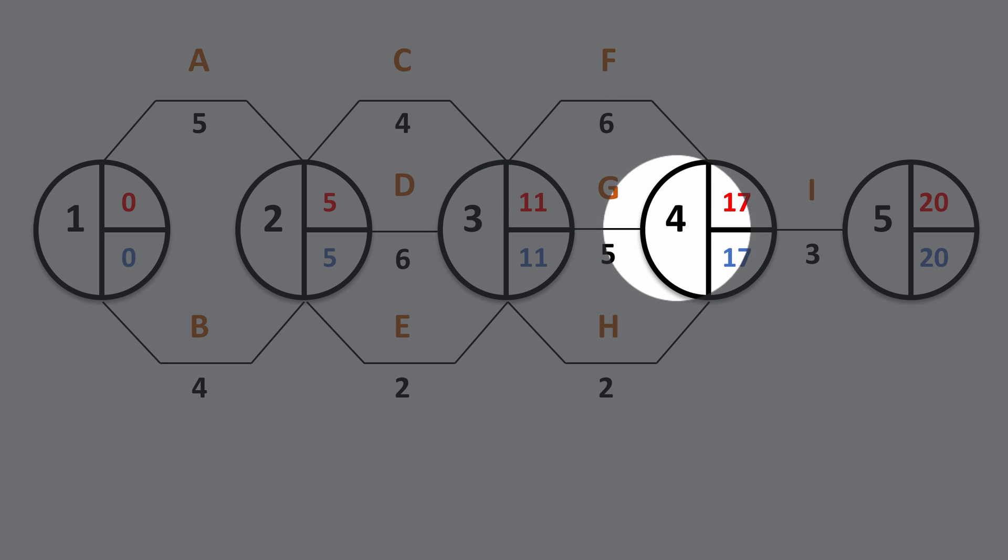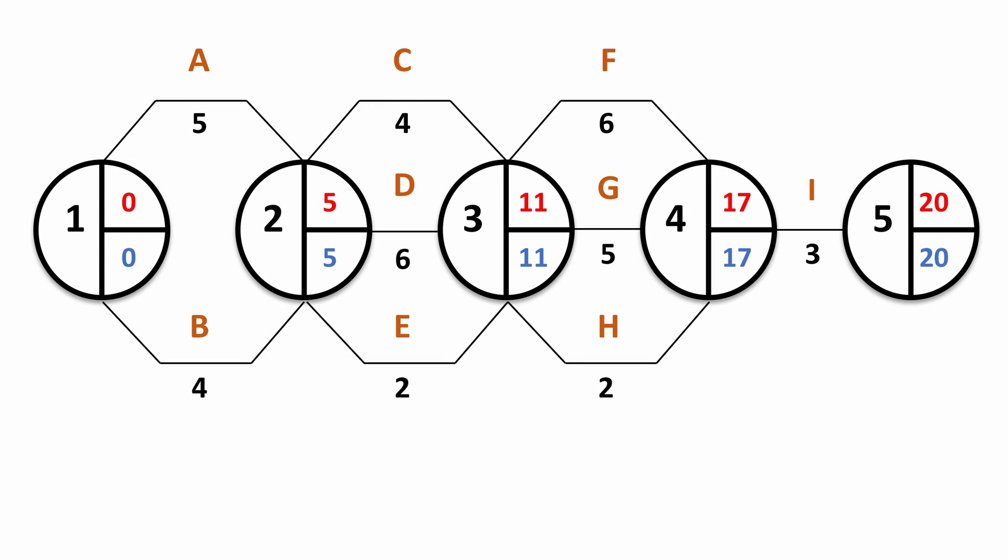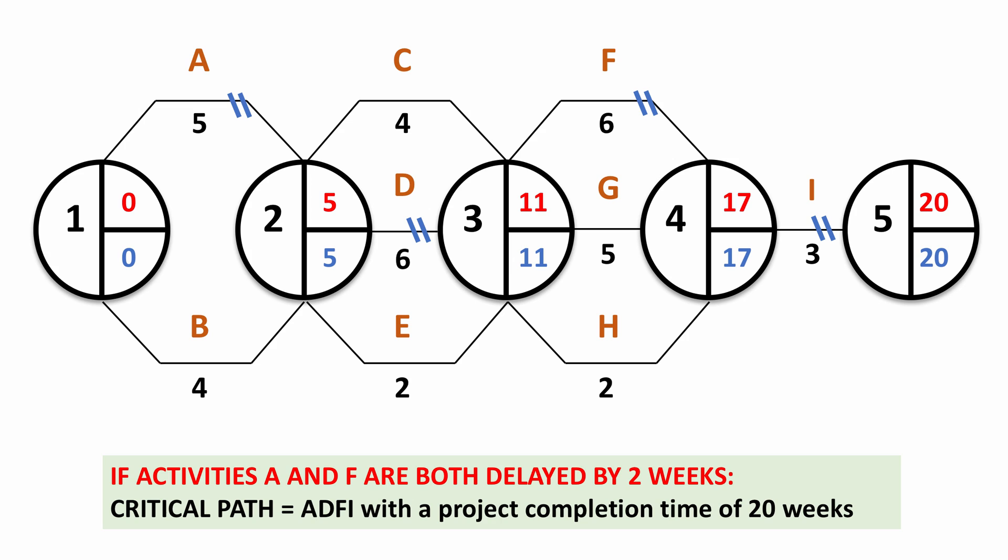So the effect of this has been to firstly make A a longer activity than B, therefore A is on the critical path, and F a longer activity than G, therefore F becomes part of the critical path. So the critical path is now A, D, F and I. And the overall effect on the network is that whilst both were delayed by two weeks, overall, the effect on the project completion time is an extra two weeks, not two lots of two weeks, it's two weeks. And that's because of the way that those two activities were treated the first time round on the critical path.